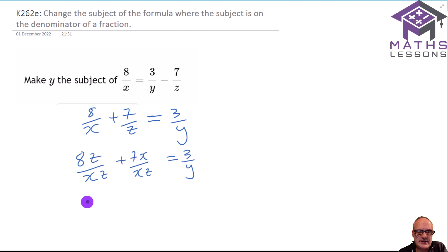So to add these together, we get 8z plus 7x all over xz, and that equals 3 over y. And now we can just reciprocate this side because it's a single fraction, and reciprocate this side because it's a single fraction.